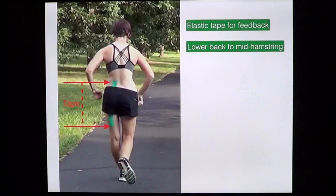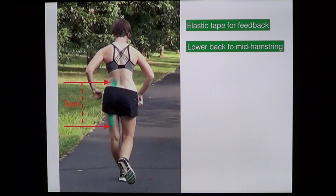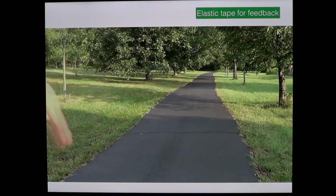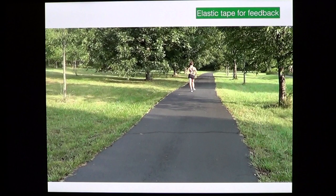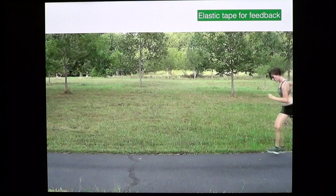Another method of providing feedback for athletes who lean at the waist is to put elastic tape from their lower back to their mid hamstring. When you see this in action, they're leaning forward and they come upright when they feel the tug from the tape. You can watch from the side — the athlete feels the tug and moves to an upright position.